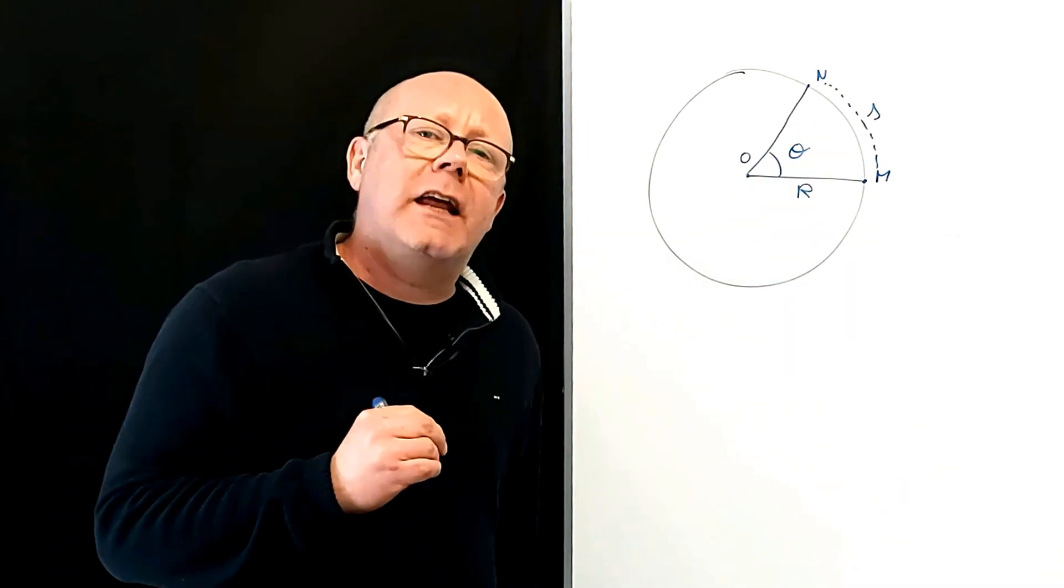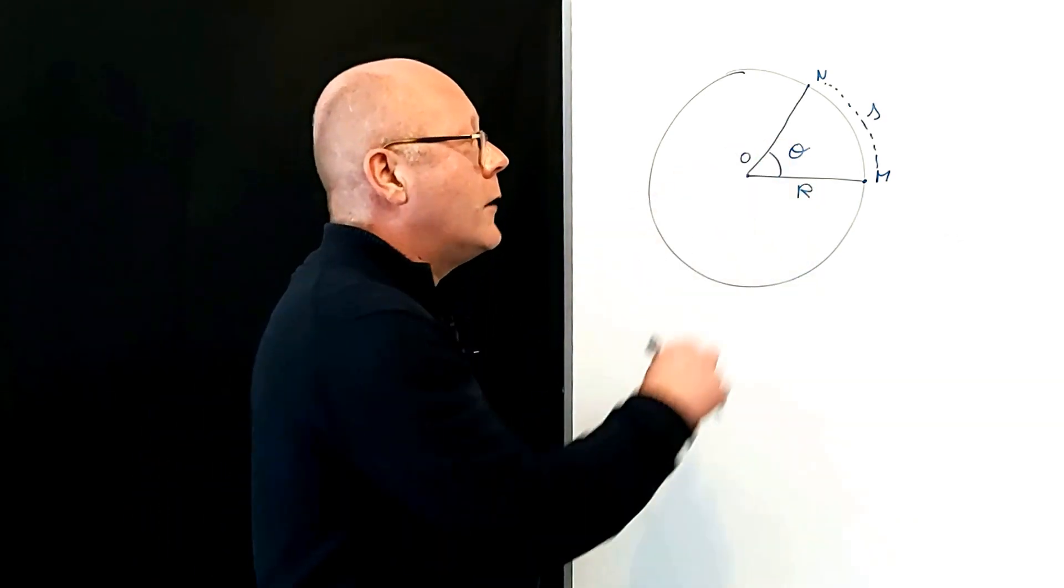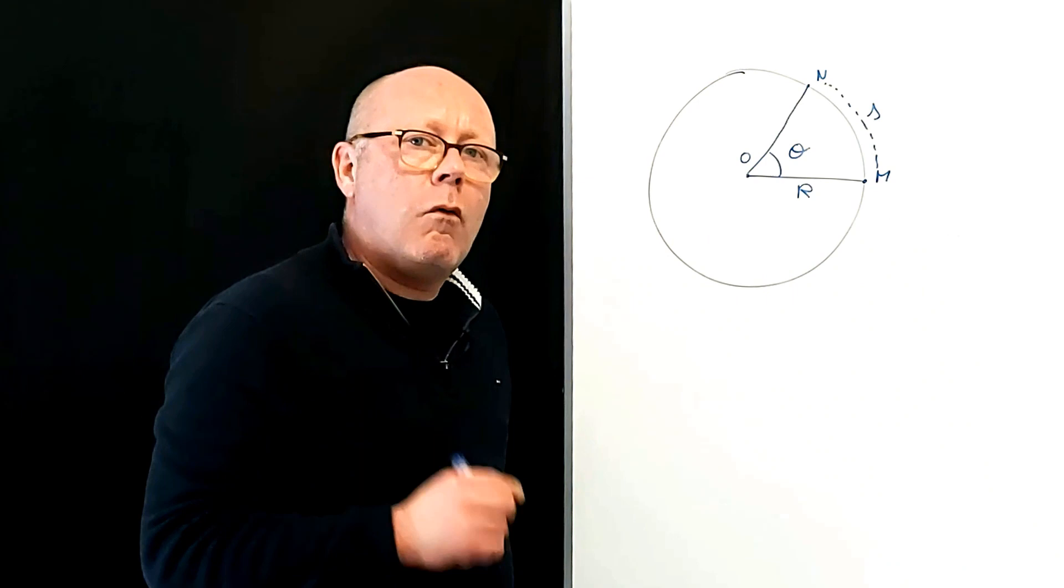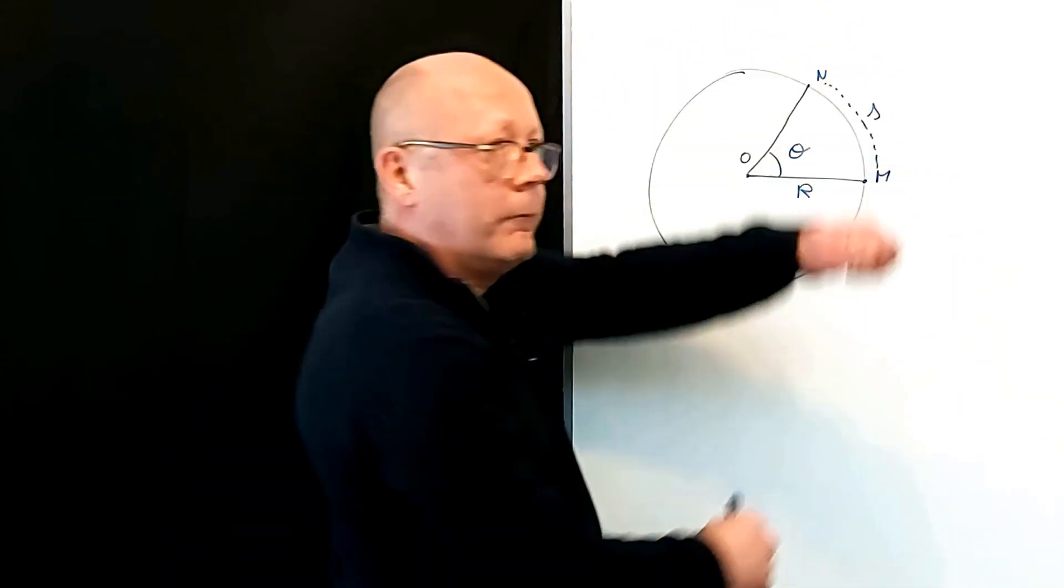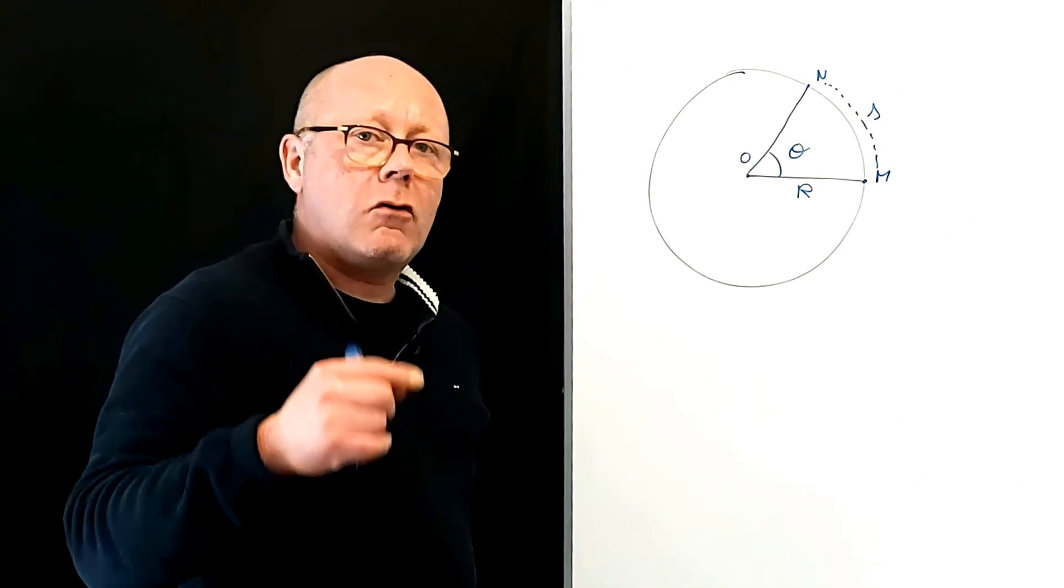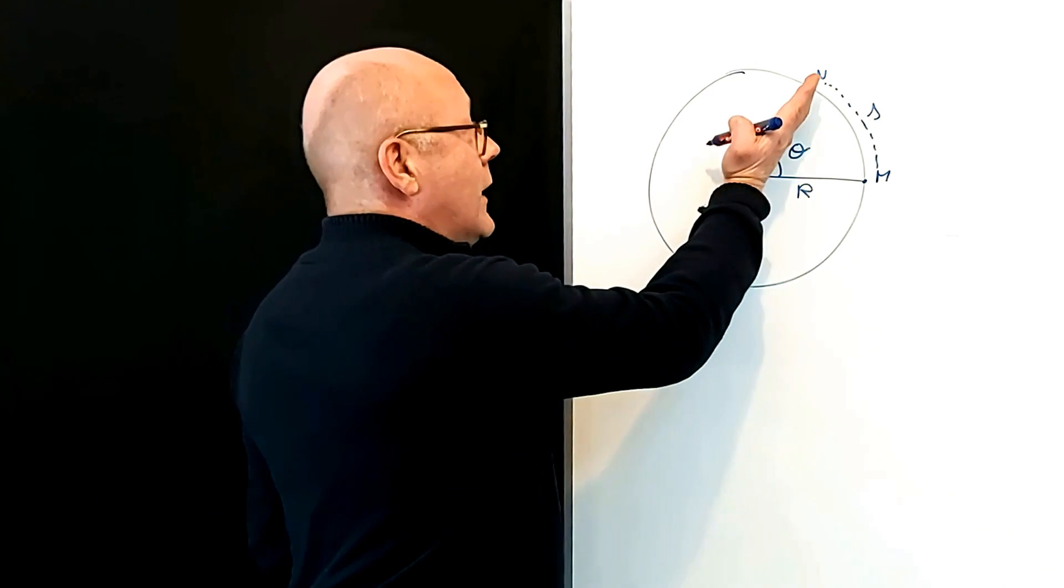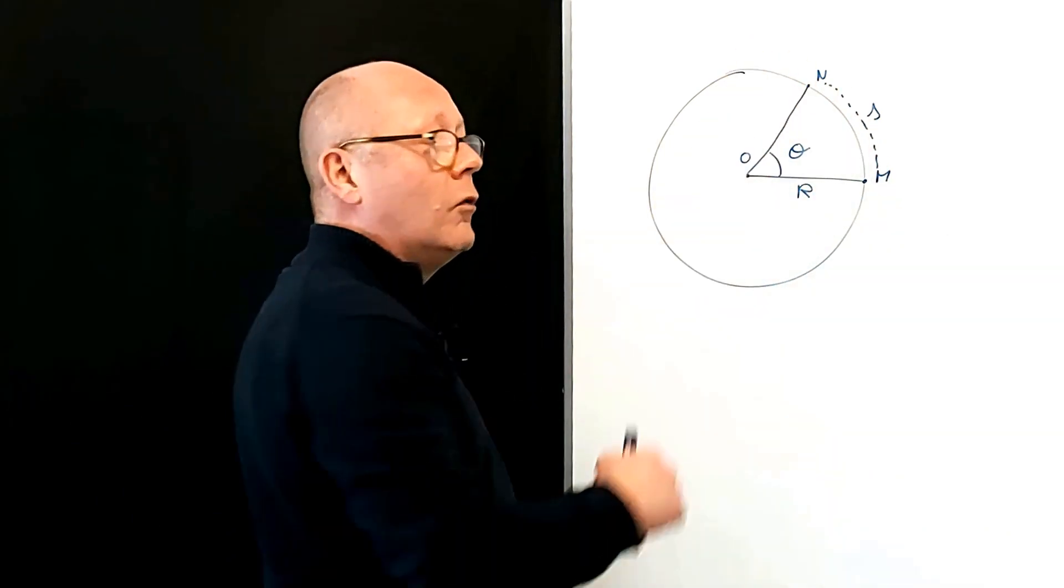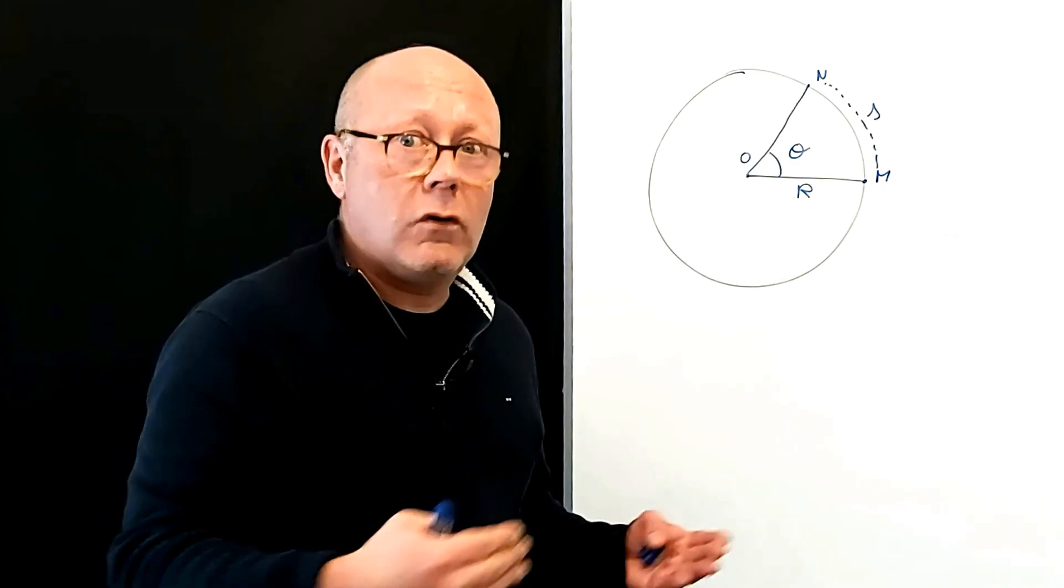Now a little bit of imagination. Imagine you keep the angle constant and you increase the radius. What happens to the arc? Well, you can see that it will increase. Now you keep the radius constant and you increase the angle. What happens to the arc? It also increases. Actually, this increase is proportional in both cases.